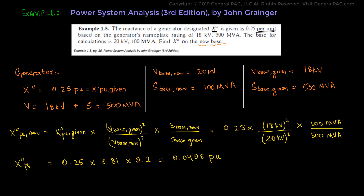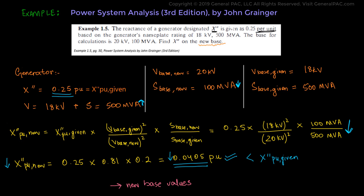So that is the value of the new per unit impedance. Comparing the new impedance value, we can clearly see that it is quite smaller than the previous one — 0.0405 per unit versus the original 0.25 per unit. This makes total sense because previously the 0.25 per unit impedance was calculated with a considerably larger MVA rating of 500 MVA. When we converted the impedance to a smaller MVA rating of 100 MVA, the effective impedance value decreased considerably. This method is employed everywhere where there is a need to calculate a new per unit value when base values have been changed, whether in simple or complex power system analysis.